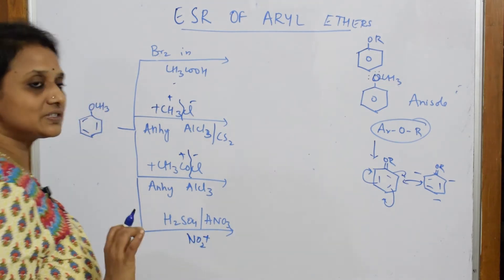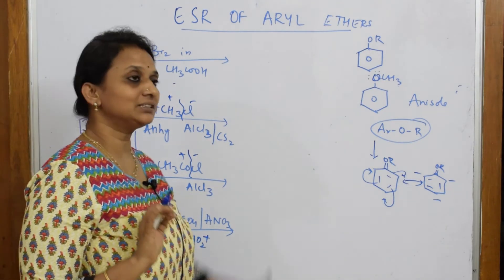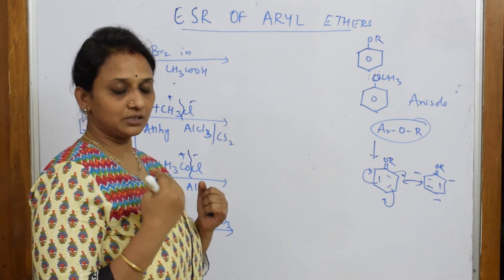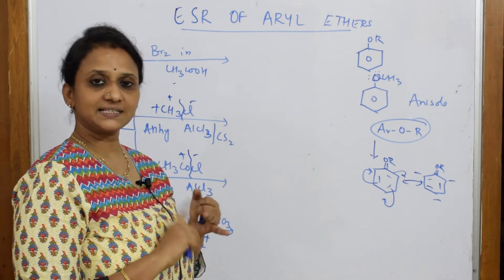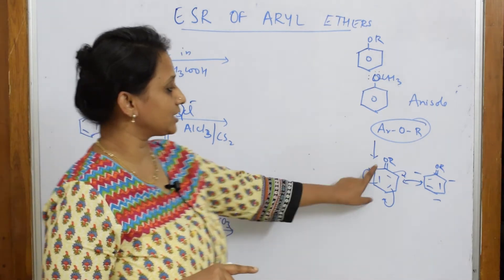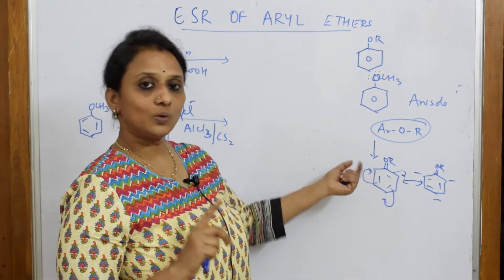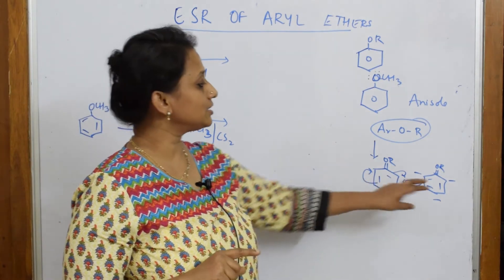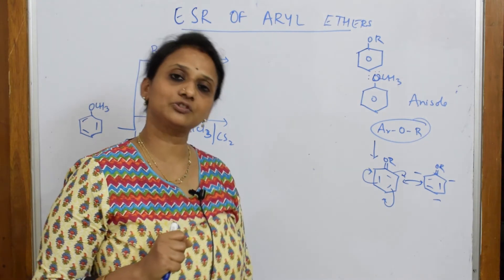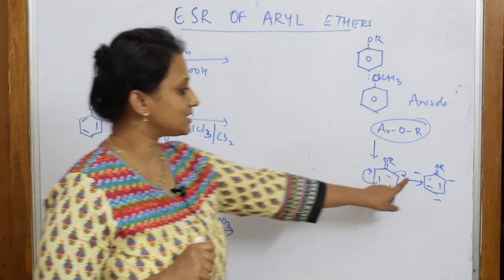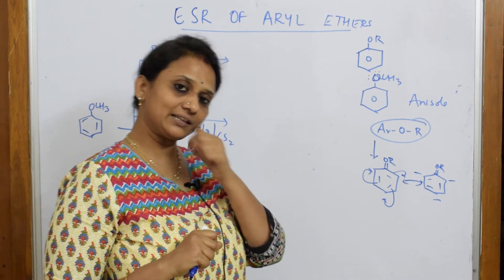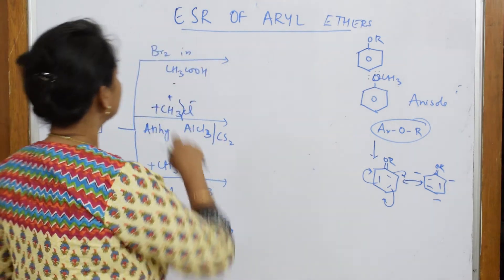Once you find anisole, first thing to remember: methyl is an electron-donating alkyl group. Second important thing: the lone pair of electrons are also donated. Once they are donated, due to resonance, ortho and para sides are opened up for the electrophile to come in and attack — electrons are present there, so the electrophile can go and attack at that particular point.